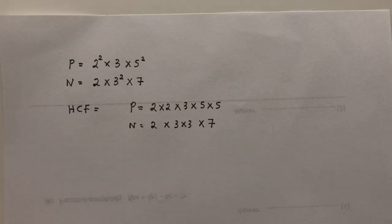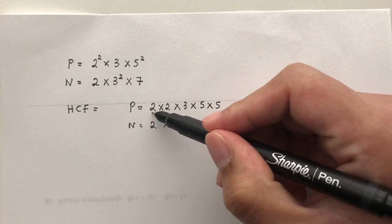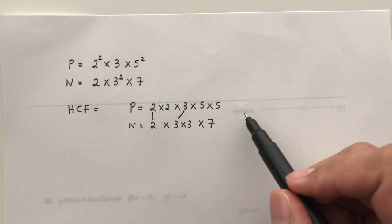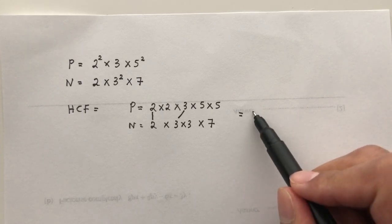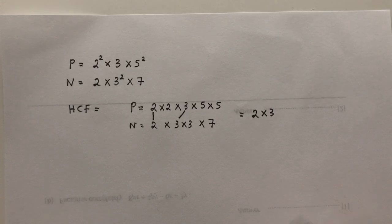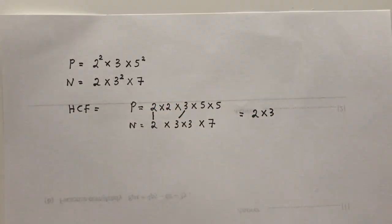So HCF, we have to look at the common factor. So we have to match. This matches with this, this with this. So that's the only two that matches. So your HCF will be 2 times 3. So that's how you find the HCF by finding which one is common with those two.